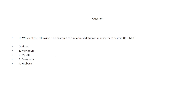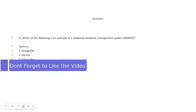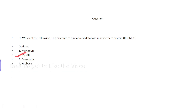Which of the following is an example of a relational database management system? The options are: MongoDB, MySQL, Cassandra, and Firebase. The correct answer is MySQL — MySQL is a relational database management system that stores data in the form of tables with predefined schemas.